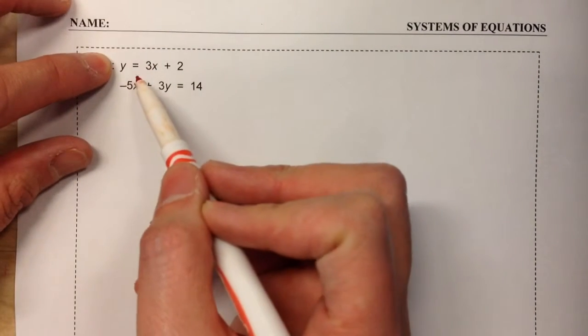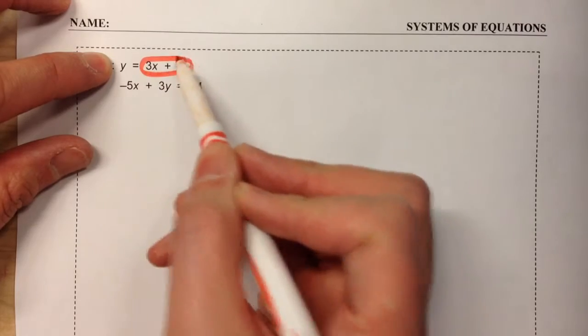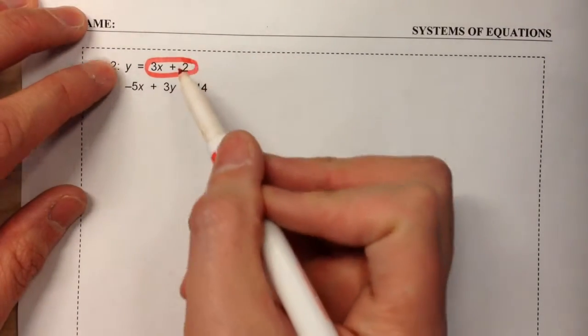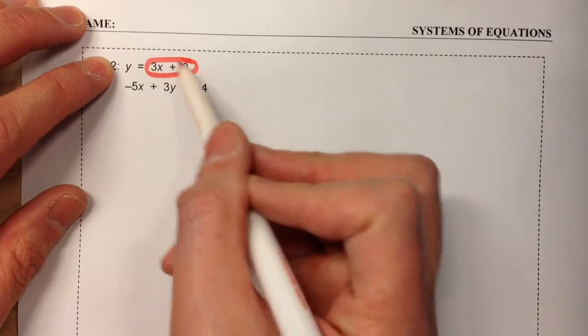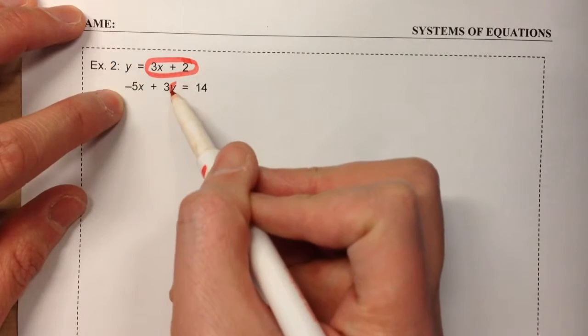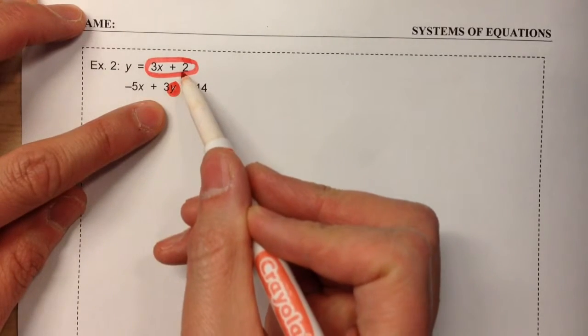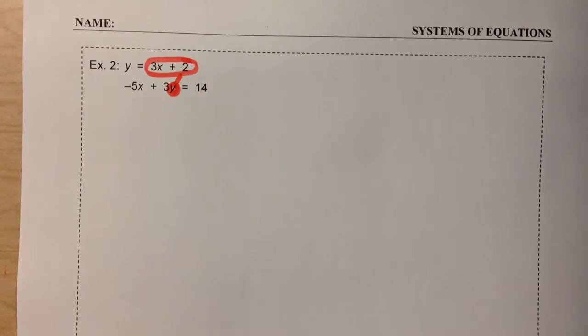Notice in the first equation, we've got y equals 3x plus 2. What we're going to do is substitute all this for y in the second equation. So we're going to replace y in the second equation with 3x plus 2, because y equals 3x plus 2.